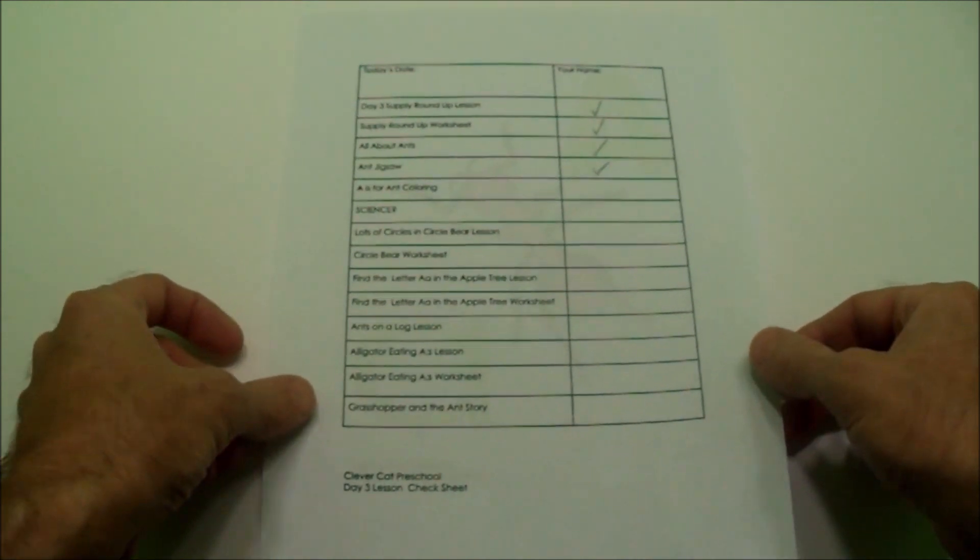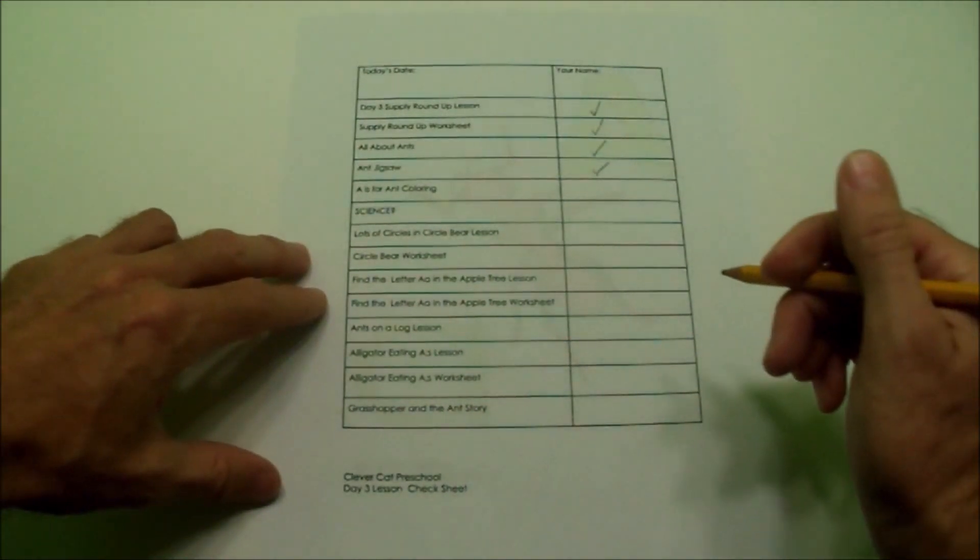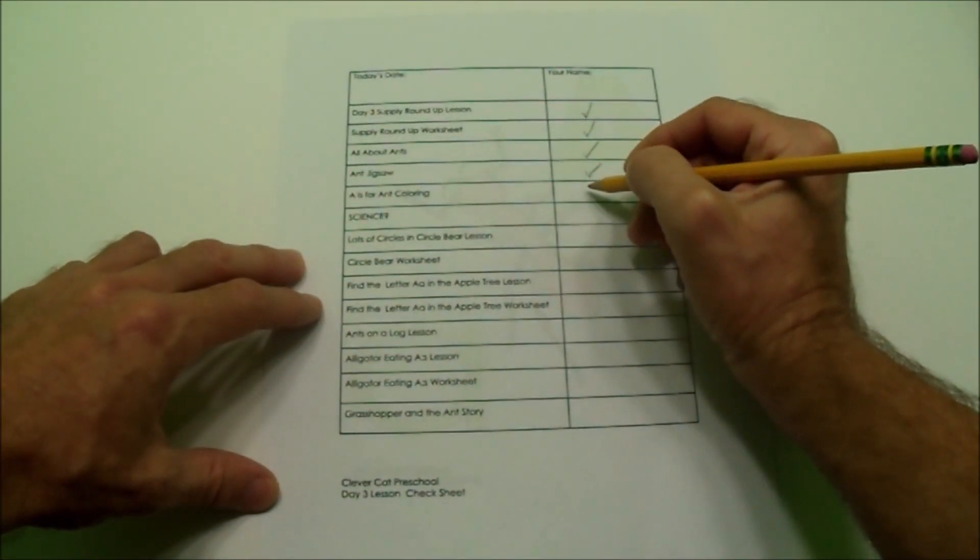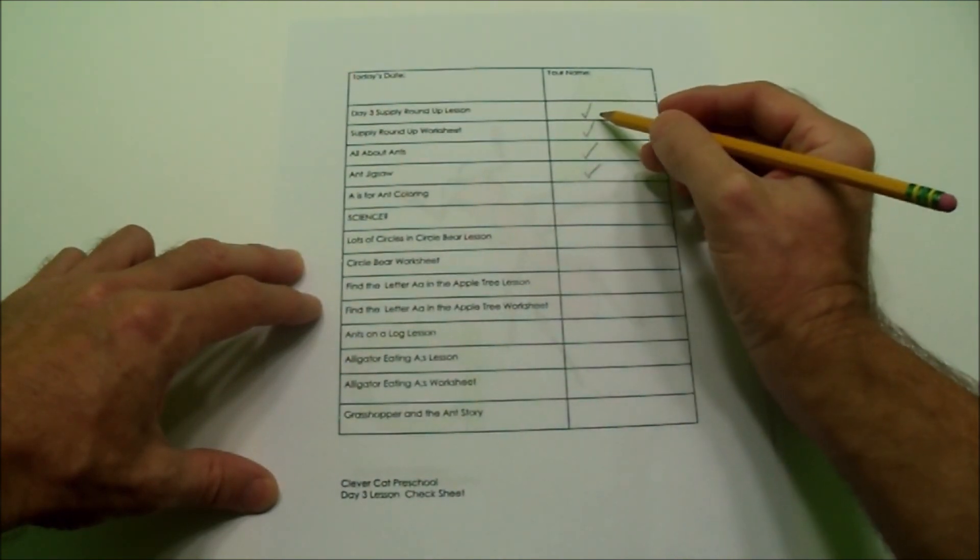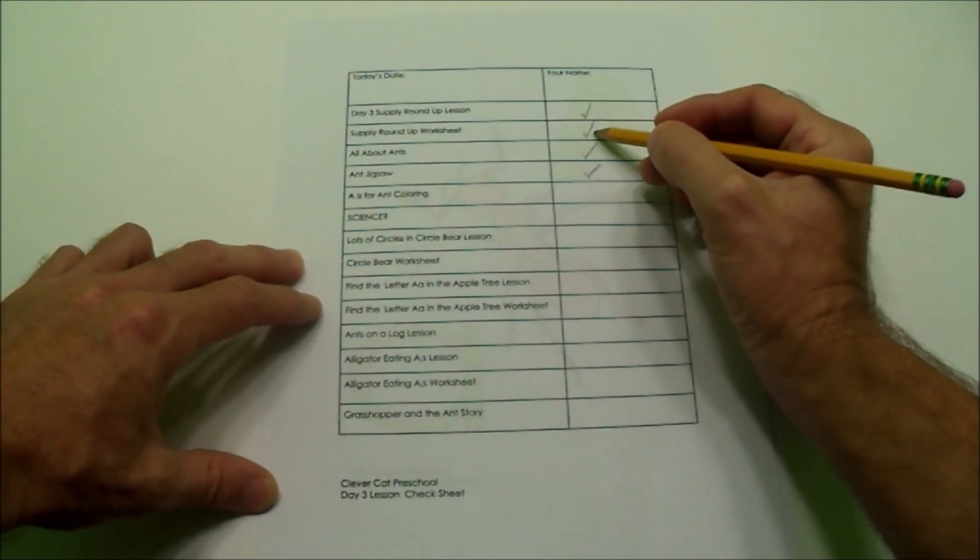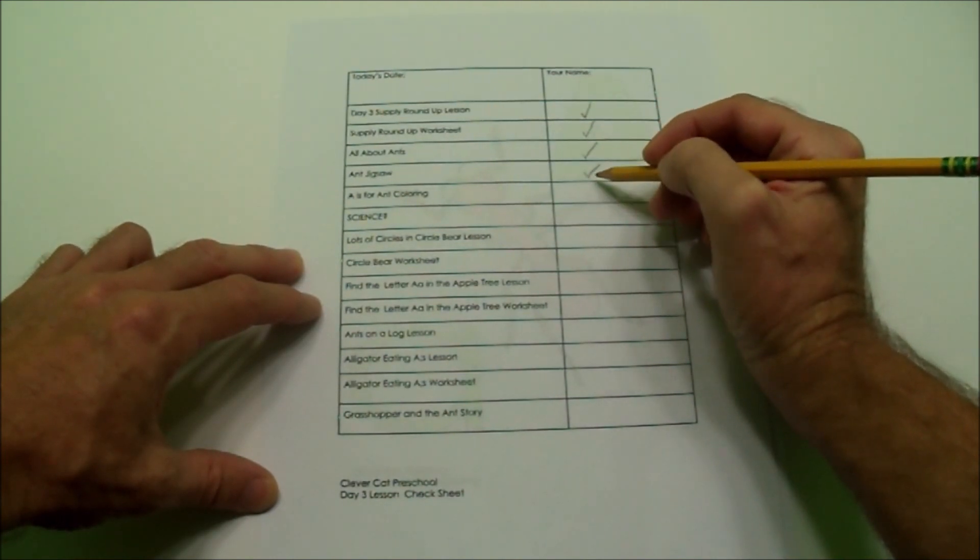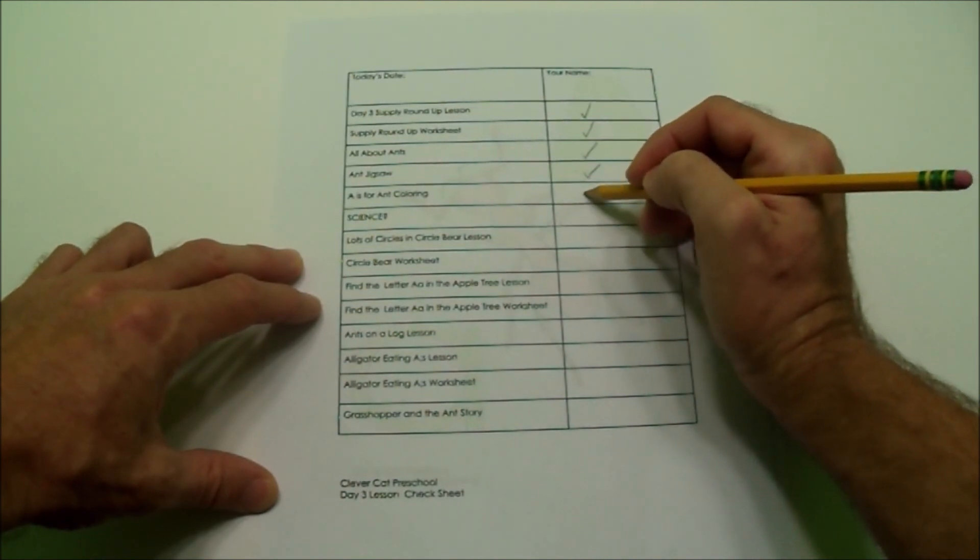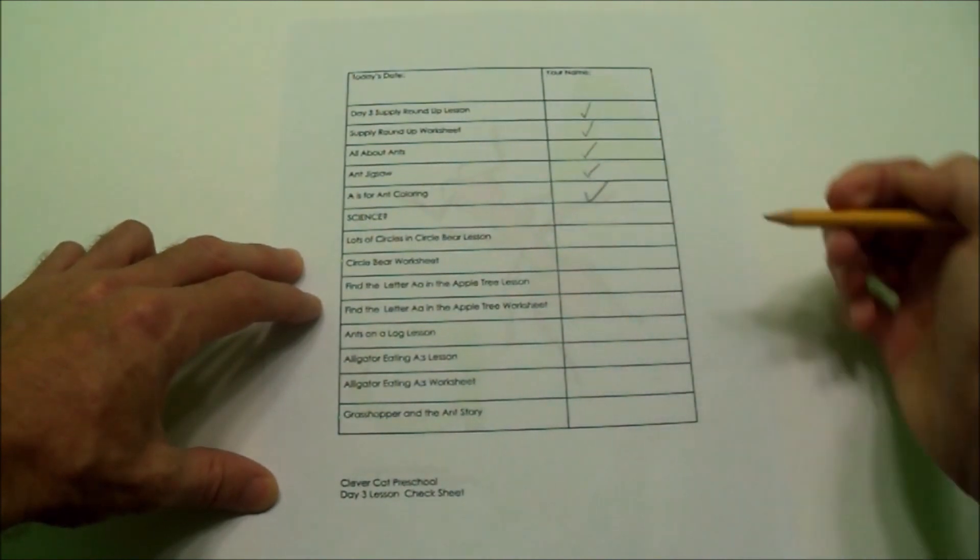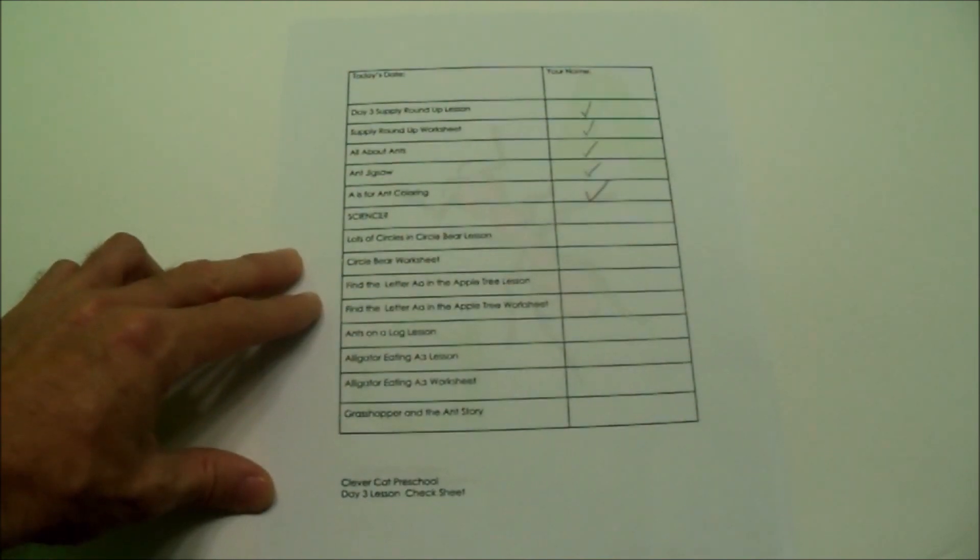And when you're done, you can get today's lesson sheet and give yourself a check. And the A is for ant coloring. So we count down one, two, three, four, five. From the top, you count down to five and then give yourself a nice big check. We finished a lesson. Isn't that nice?